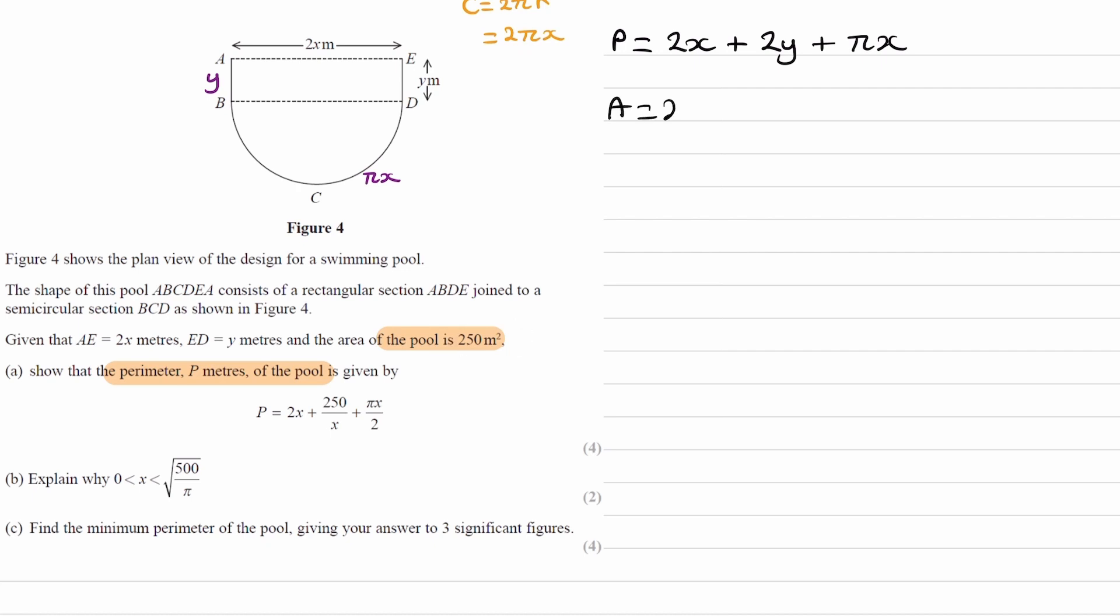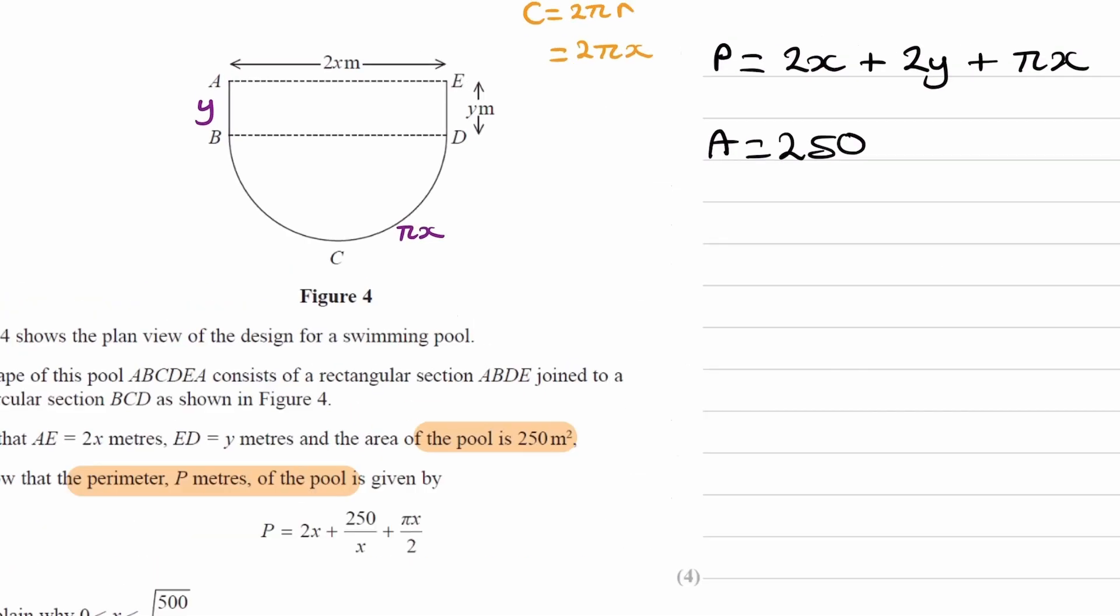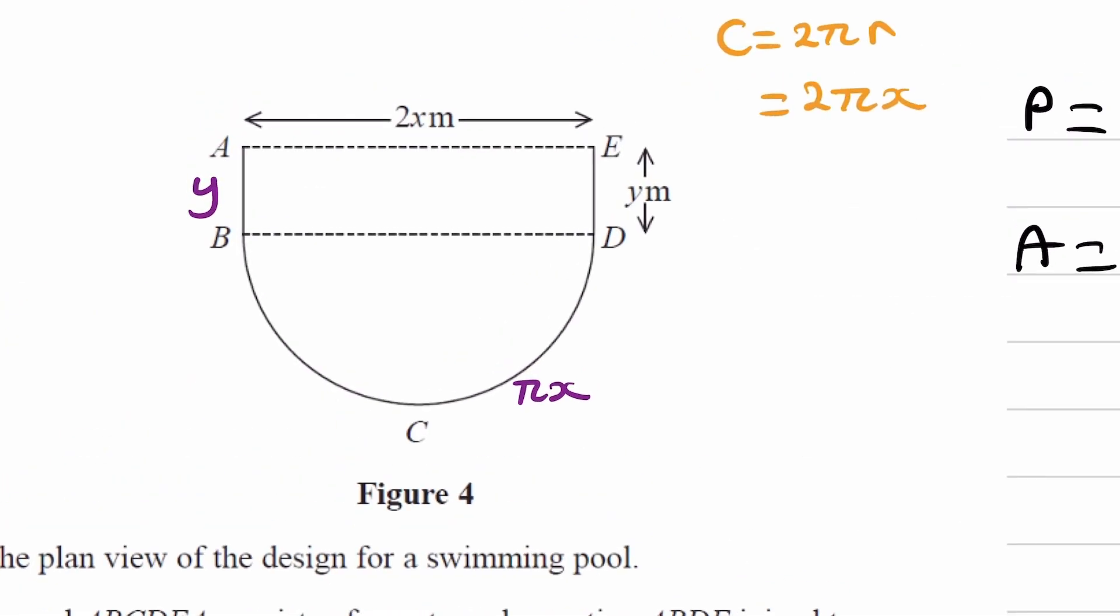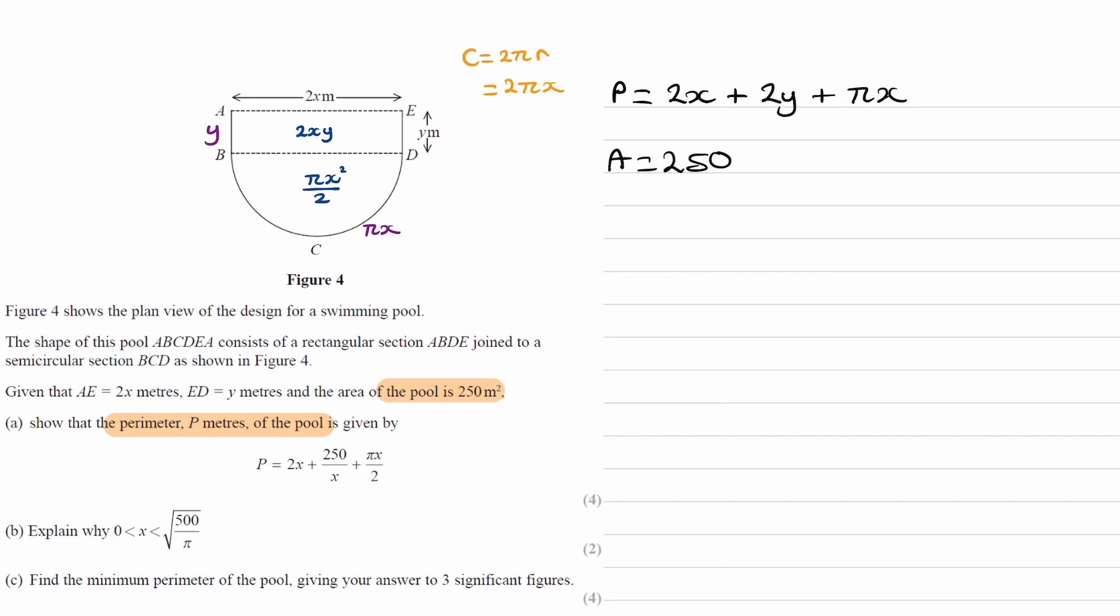The area we know is 250. If we consider our shape, the rectangle at the top has an area of 2xy. And the shape just beneath, the semicircle, well, the area of a circle is πr², or in this case, πx². But then we would divide that by 2, as we have a semicircle. So, πx²/2. And so, we can rewrite our area as 2xy + πx²/2.